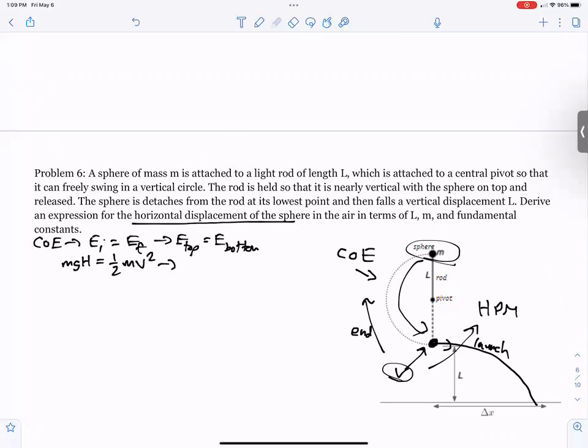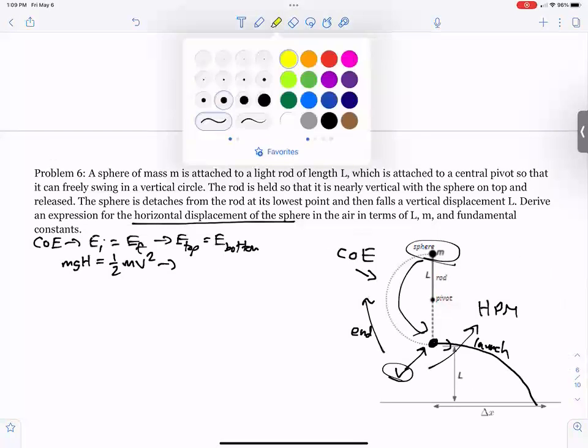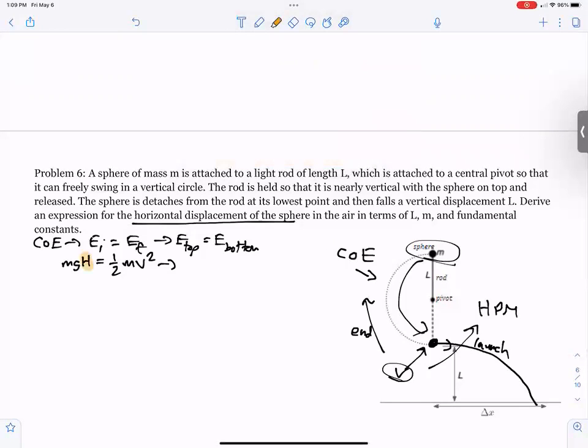Now, H, we have to make a substitution there. H is the entire height, but that is L plus L. Two radii, the diameter would be L plus L or 2L. So MG2L equals one half MV squared.